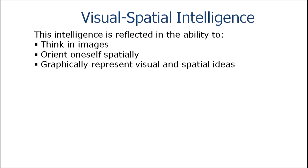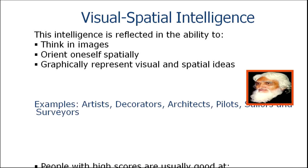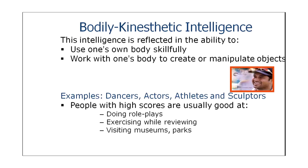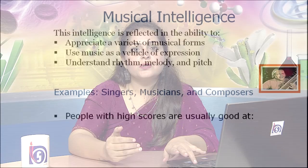The third type is visual-spatial intelligence — these people tend to think in images, orient themselves spatially, and graphically represent visual and spatial ideas. They are typically artists, decorators, architects, pilots, and surveyors. The fourth type is bodily-kinesthetic intelligence — the ability to use one's own body skillfully, generally found among dancers, actors, athletes, and sculptors. The fifth type is musical intelligence — the ability to appreciate musical forms, use music as a vehicle of expression, and understand rhythm, melody, and pitch. Singers, musicians, and composers typically score high on musical intelligence.